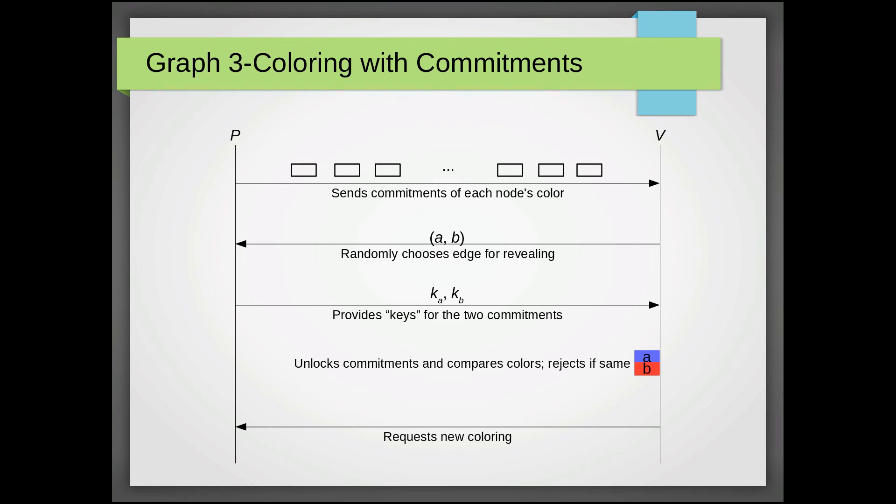So once V has these commitments as locked boxes, it just chooses an edge randomly represented by AB and asks P to reveal it. So P just provides the keys to these two locked boxes denoted here by KA and KB.